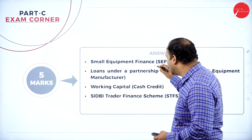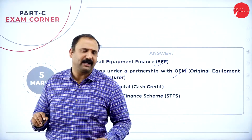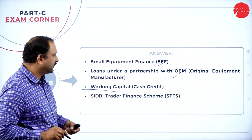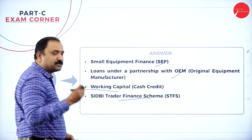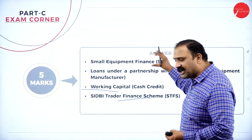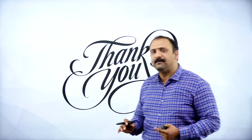The main schemes of SIDBI include small equipment finance — loans under partnership with original equipment manufacturers like Mahindra and Mahindra. SIDBI also provides working capital and a trade finance scheme through which small traders looking for amounts like 50,000 to 2 lakhs can be financed. With that I come to the end of this session — I hope this will be a great resource for writing your examination and getting the best marks.